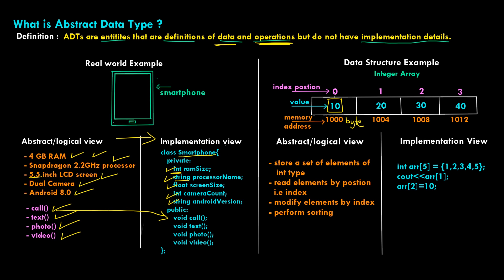We have index positions allocated and the blue ones are the actual values — position 0 stores 10, then 20, 30, and 40. The abstract or logical view of this integer array can be stated as: this data structure stores a set of elements of integer data type; we read elements by position, that is by index starting from zero; we can modify elements by their index; and we can also perform sorting, among many other possible operations.